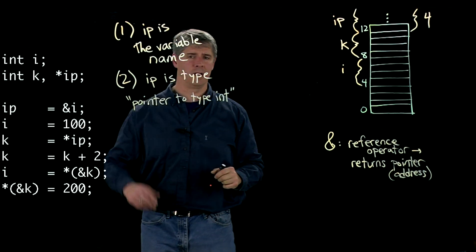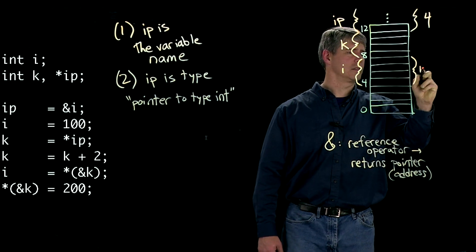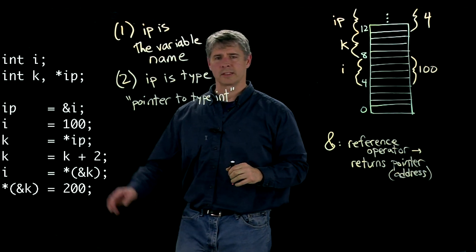Next line down. i is equal to 100, so that just takes i here and sets it to the value of 100.